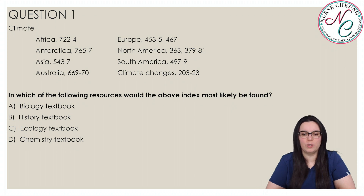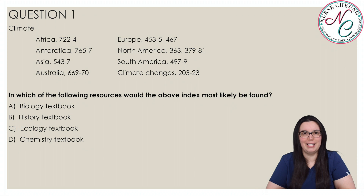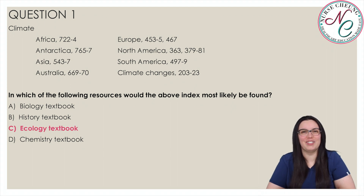Which of the following resources would the above index most likely be found? Is it A, Biology textbook; B, History textbook; C, Ecology textbook; or D, Chemistry textbook? And the correct answer is C, Ecology textbook.